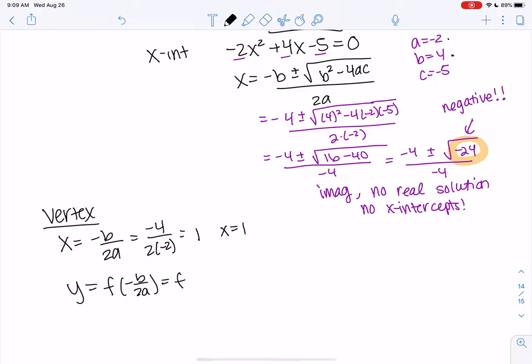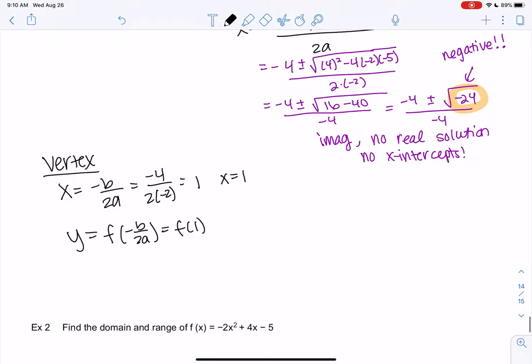So I know I made it look really scary, but it's a lot easier than all that crazy stuff we did. So we're going to go ahead and plug in 1 to the function. So we get negative 2 times 1 squared. We get 4 times 1 plus or minus 5.